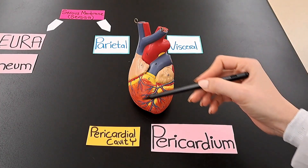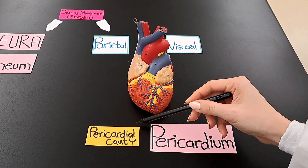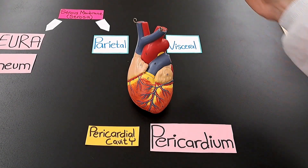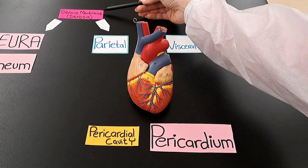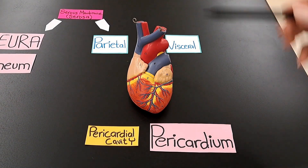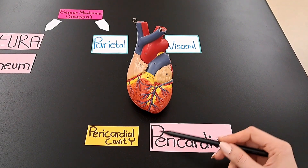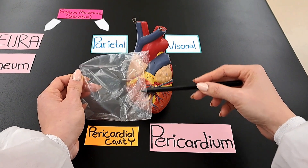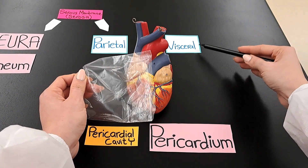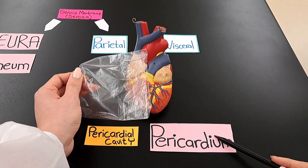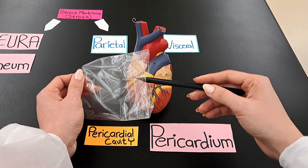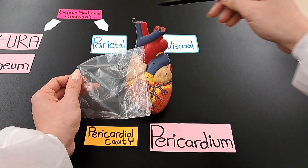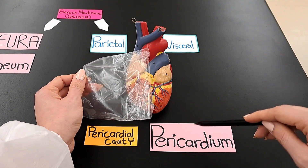This is the heart. The heart is located in the pericardial cavity. The heart is covered with a serous membrane. The name of that membrane is the pericardium. The layer of the pericardium that covers the heart is the visceral pericardium. The layer of the pericardium that lines the pericardial cavity is the parietal pericardium.